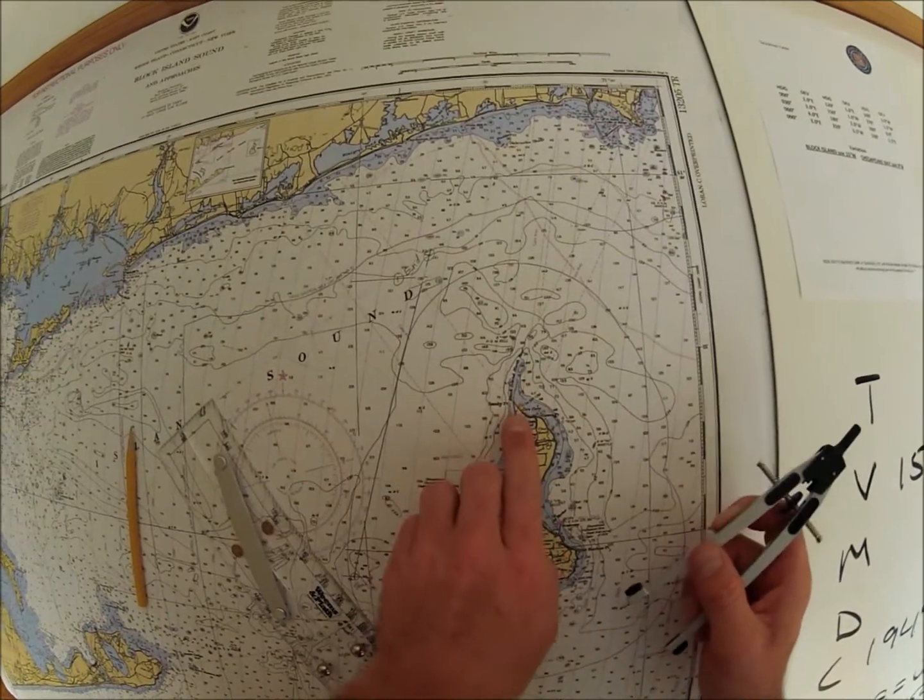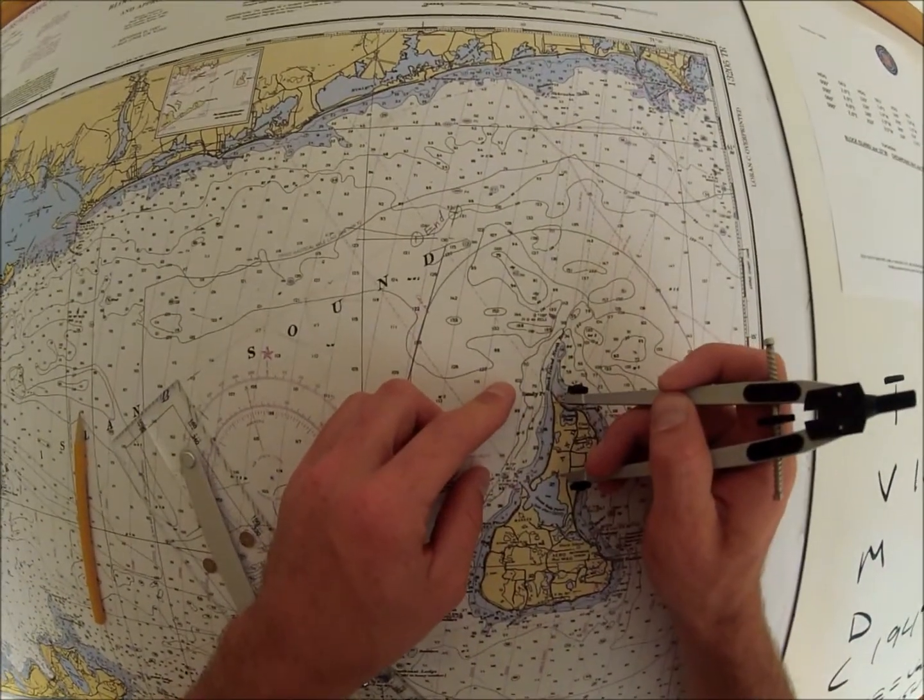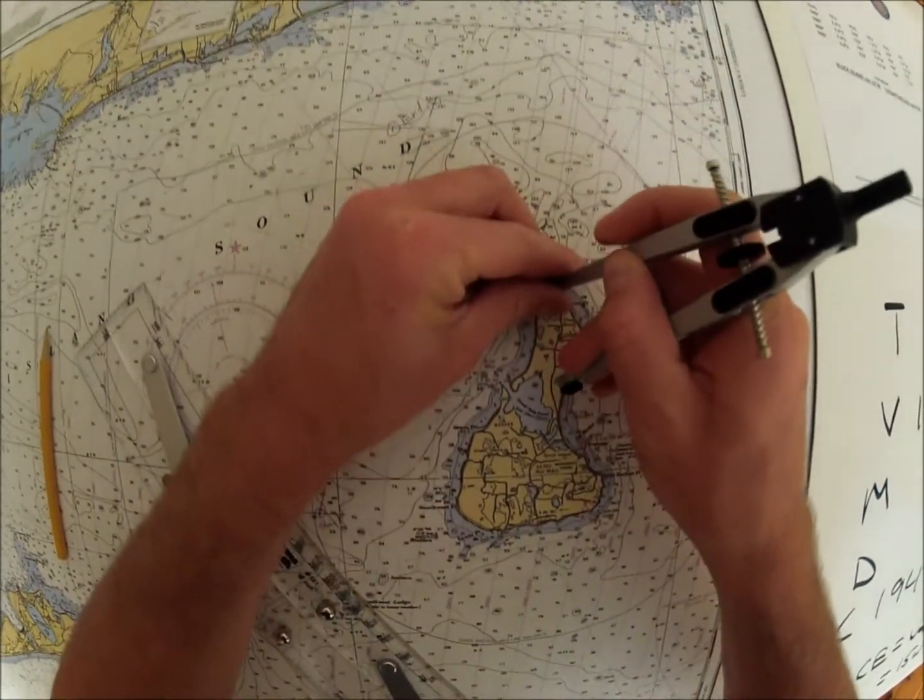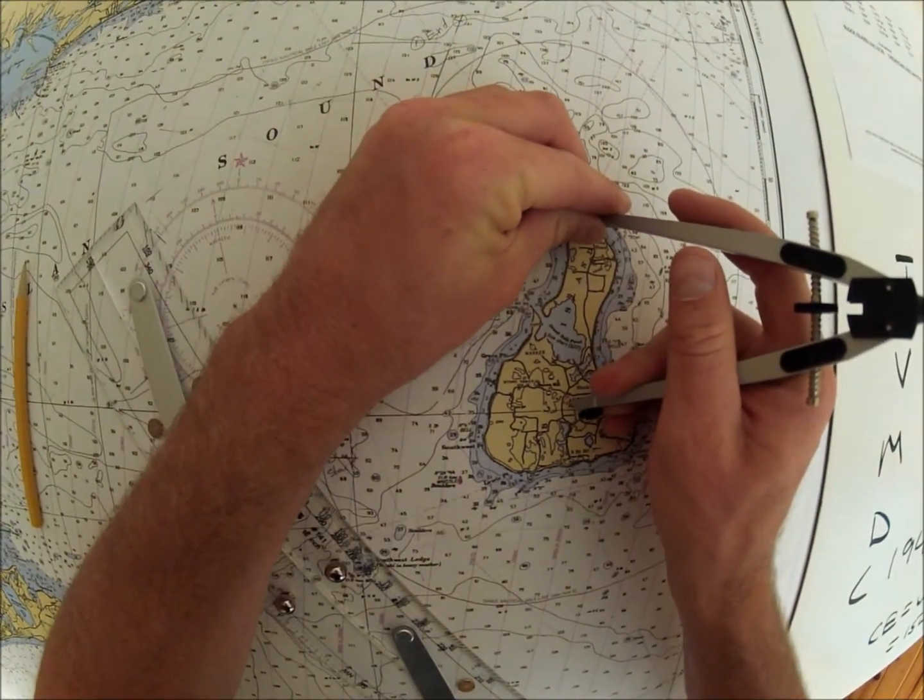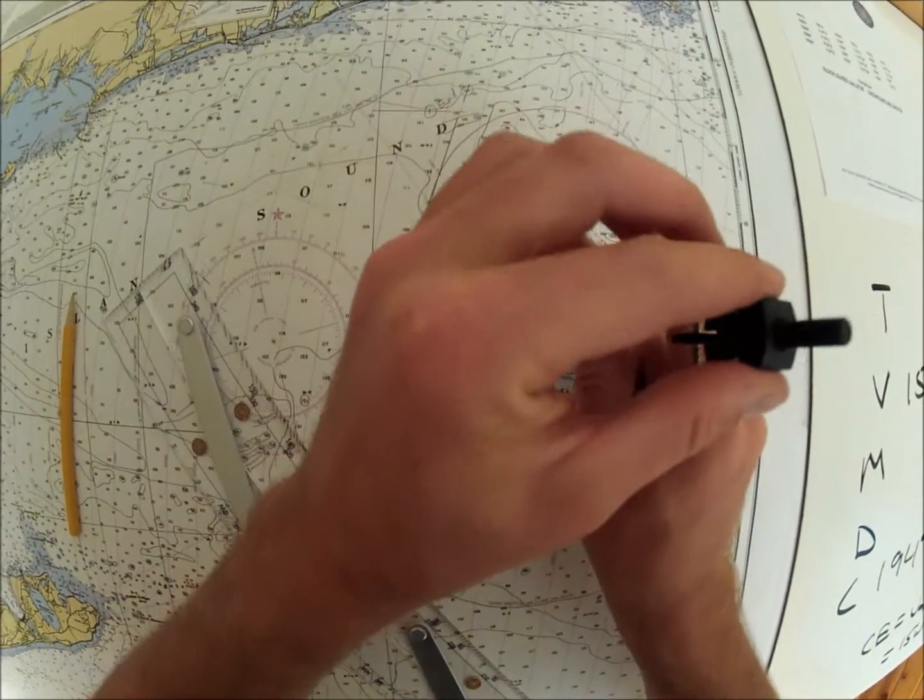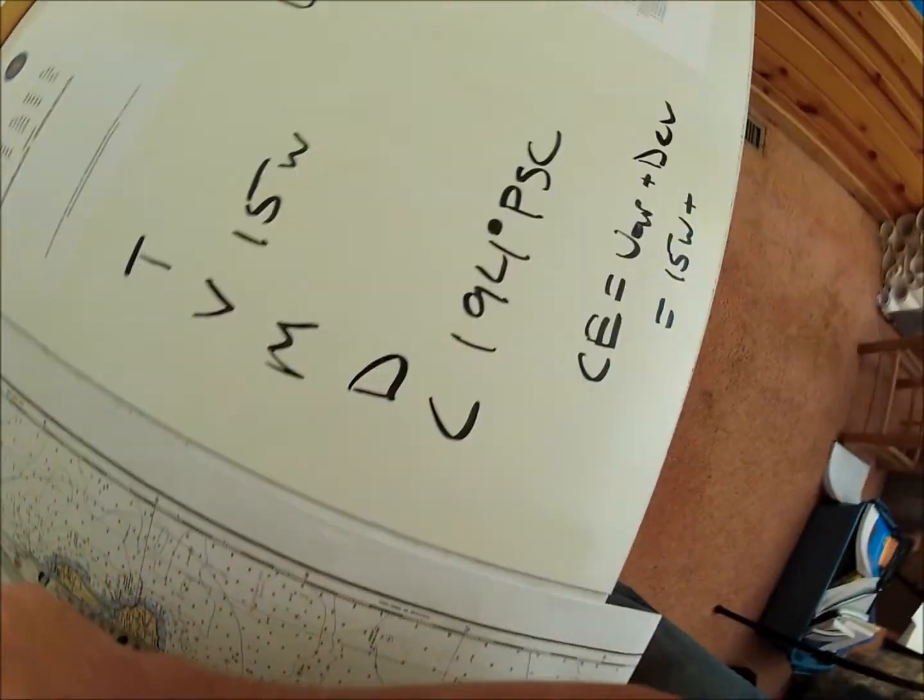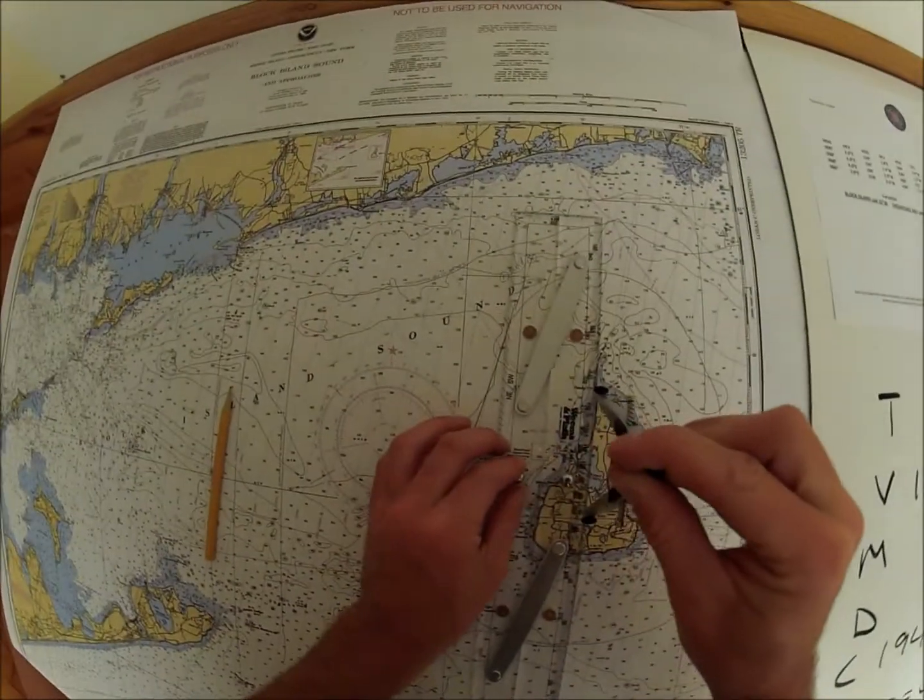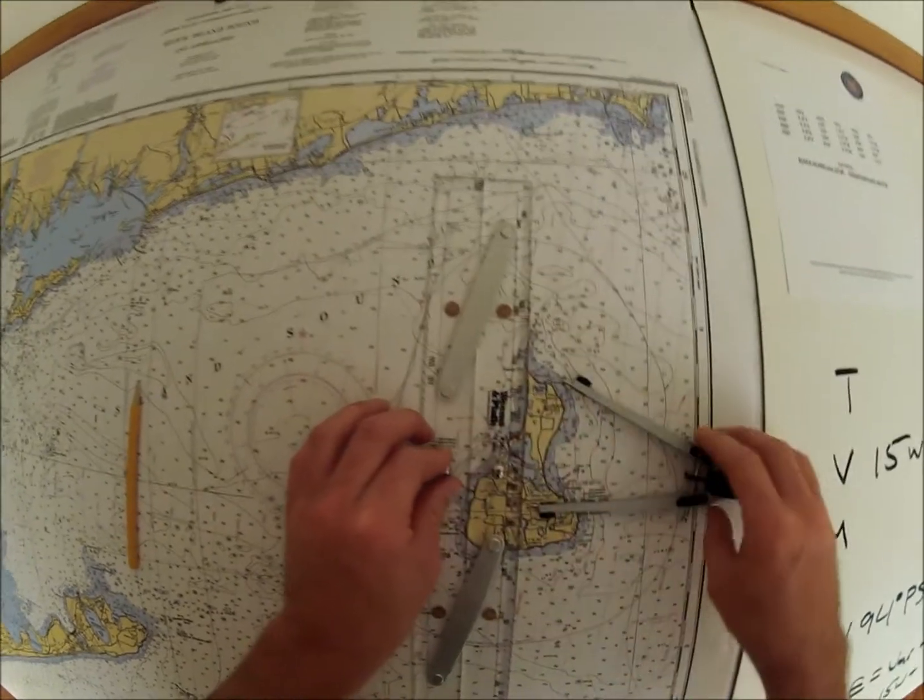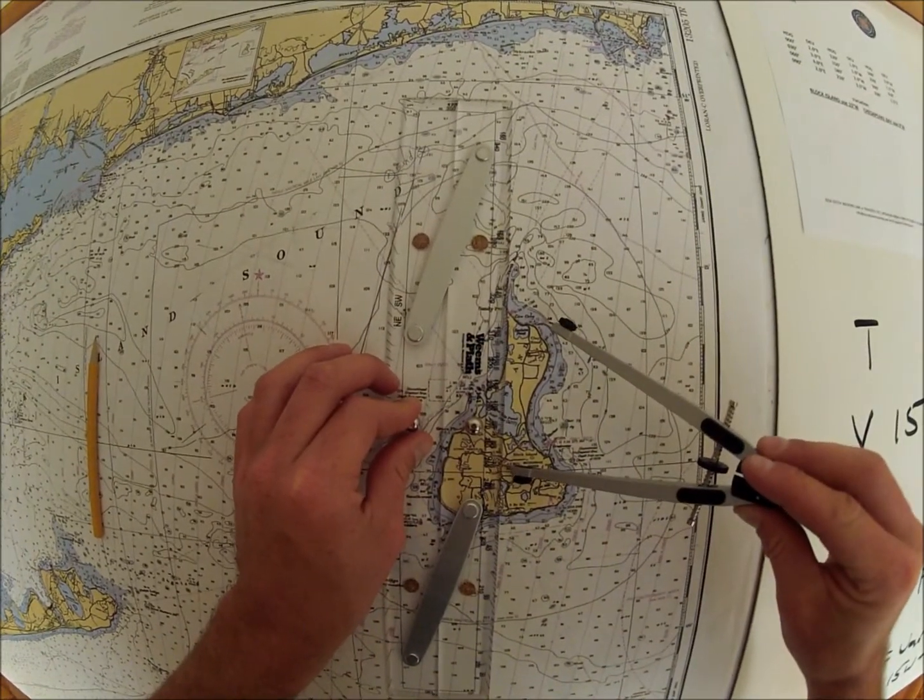North Light and Arrow Beacon. Here's Block Island. Here's the north side. Here's the North Light. North Light and Arrow Beacon is here. Okay, so it's bearing 194, so we know what side of the compass to use. That side, the one that's 194.